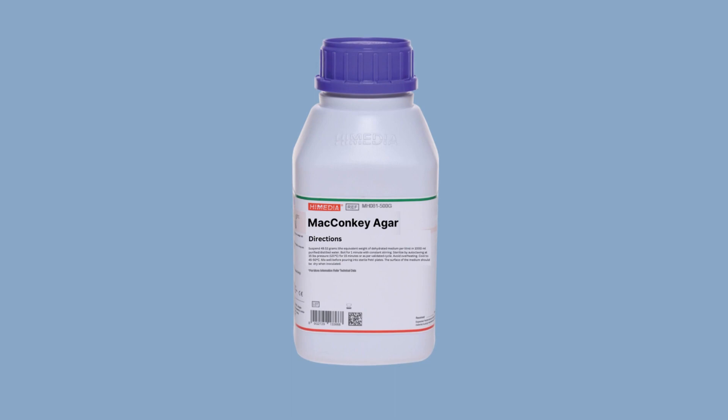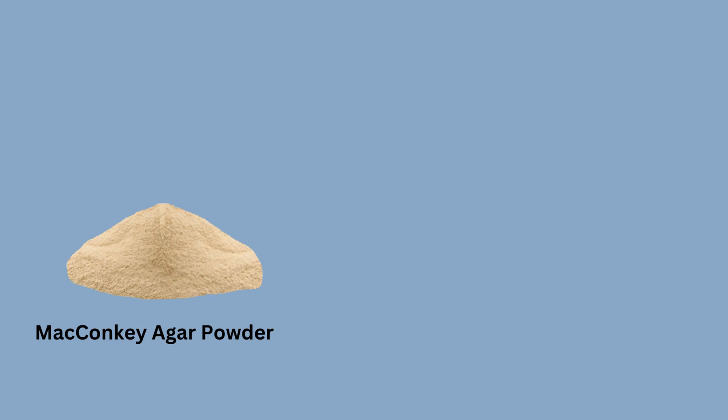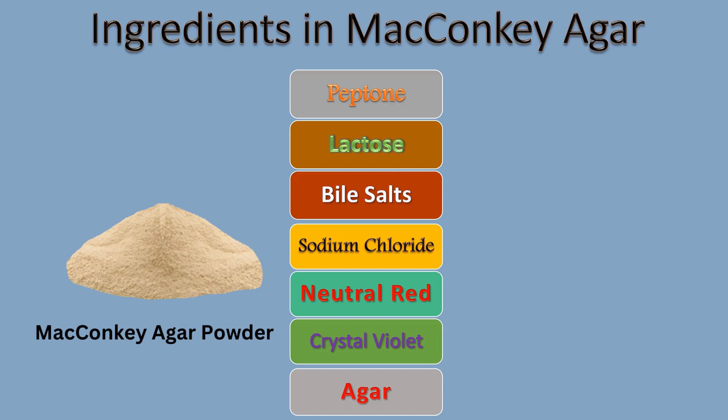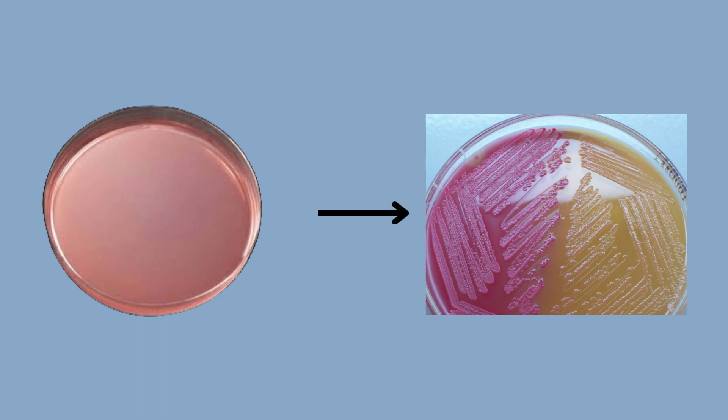This bottle contains McConkie's Agar powder, which is a mixture of different ingredients. The ingredients present in McConkie's Agar powder are peptone, lactose, bile salt, sodium chloride, neutral red, crystal violet, and agar. McConkie's Agar plates are prepared using this powder and are used for doing the McConkie's Agar test.